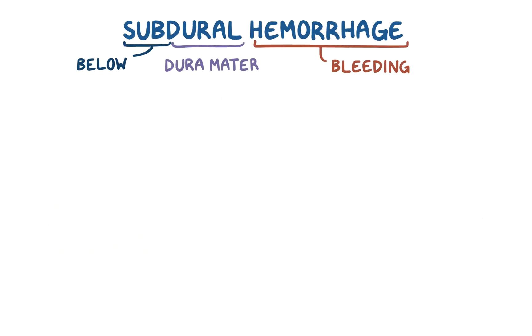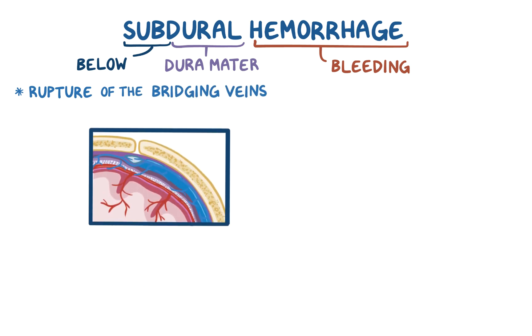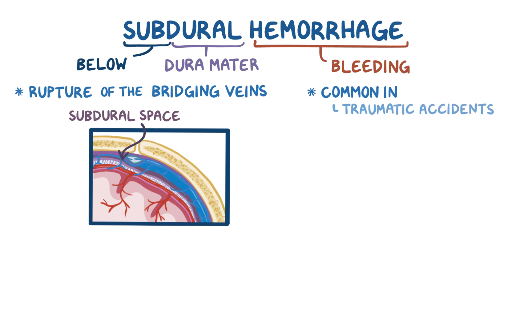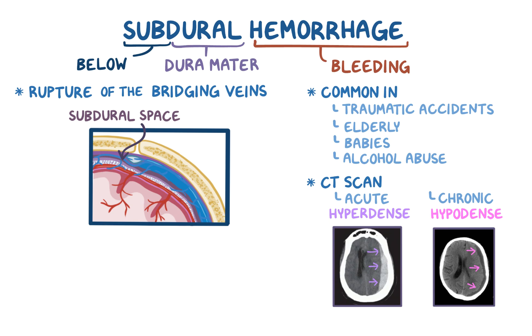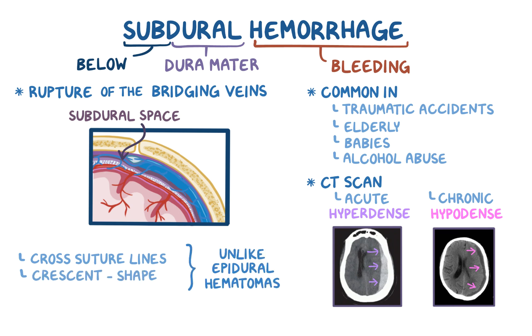As a quick recap: a subdural hemorrhage is bleeding below the dura mater caused by the rupture of the bridging veins found within the subdural space. Subdural hemorrhages are common in traumatic accidents, as well as in some groups like the elderly, babies, and individuals that abuse alcohol. On a CT scan, an acute subdural hemorrhage forms a hyperdense blood collection, whereas a chronic subdural hemorrhage forms a hypodense blood collection. Subdural hematomas cross suture lines and follow the contour of the brain, forming a crescent shape, unlike epidural hematomas which don't cross suture lines and push on the brain forming a biconvex shape.